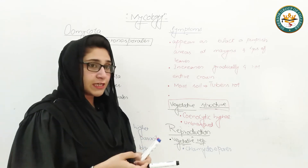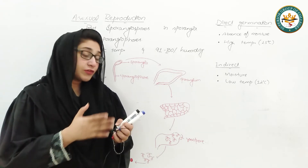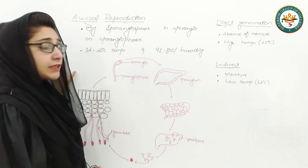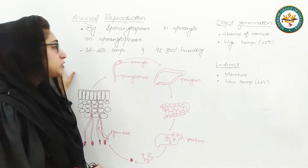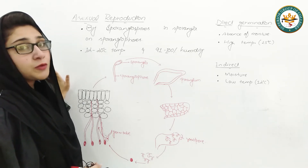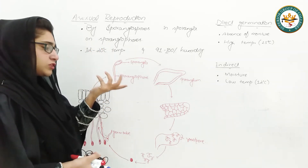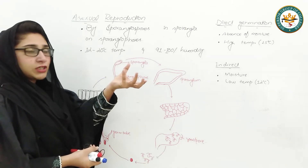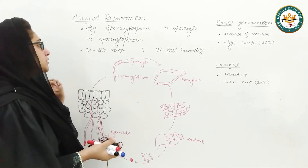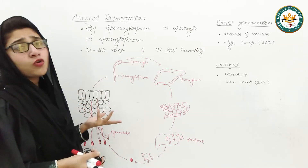Now we will see asexual reproduction in detail. They reproduce asexually by formation of sporangiospores, which are produced inside a reproductive structure called sporangia. Sporangia are produced on a stalk known as sporangiophores. Sporangiophores are the stalks which bear the sporangia, which in turn produce the sporangiospores.